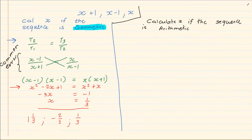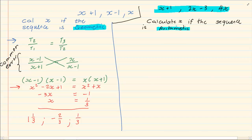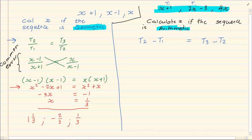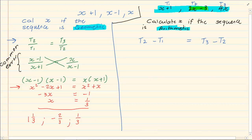Now, what if the question says calculate x if the sequence is arithmetic? When they use the word arithmetic, we know that term 2 minus term 1 is equal to term 3 minus term 2. The first one is term 1, the second is term 2, and the third is term 3. So we are going to substitute: we take 2x minus 3.